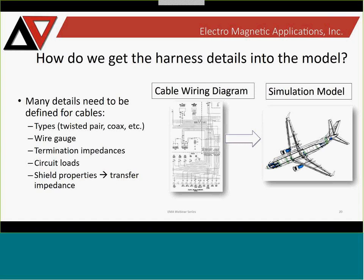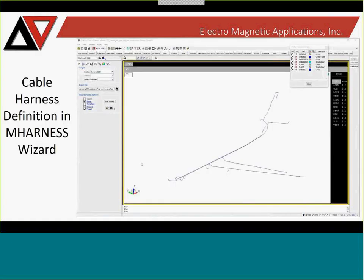It can be a lot of information to gather when putting together a model. We have tried to help by maintaining a database of resistances, diameters, and transfer impedances that we have measured or determined for typical aerospace cables. You still have to determine which cables are in your design, but we have stored data for different cable types that we have, in most cases, measured ourselves.